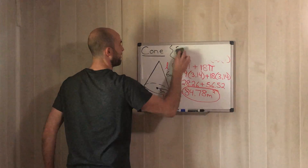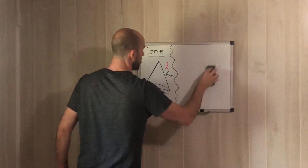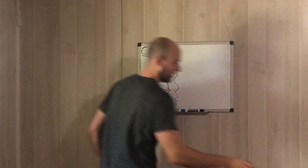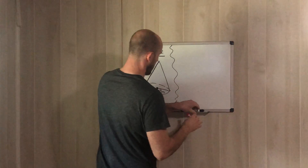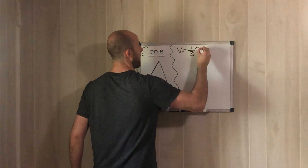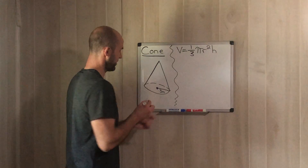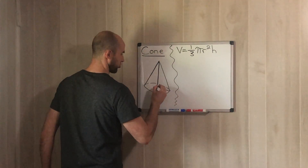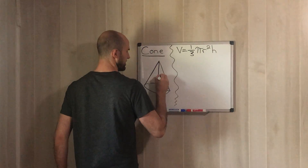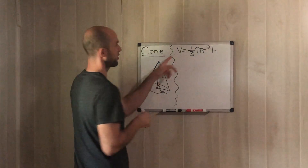You'll have one of these questions on the final, and another question asking for the volume of the cone. When finding volume, you no longer need the length — instead you need the height. Remember, the height is always a straight line that forms a 90-degree angle. The formula for the volume of a cone is: V = (1/3)πr²h. We have the radius, and we'll say the height is 5 meters.